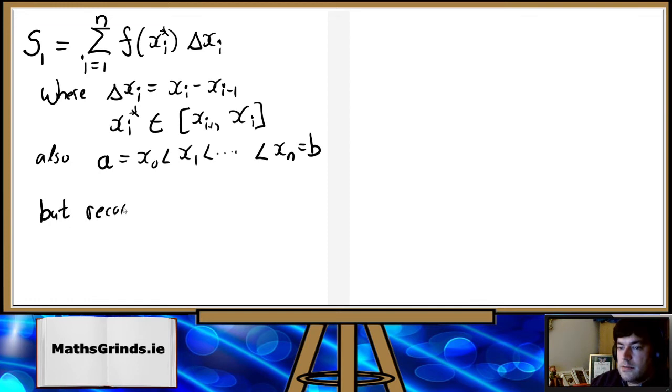But recall that we're told f of x is less than or equal to g of x. So that means then that f of x_i star is less than or equal to g of x_i star.